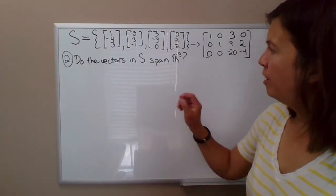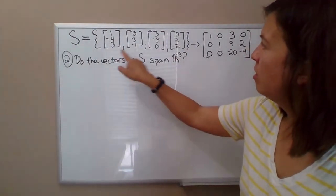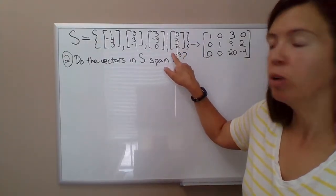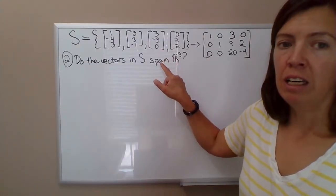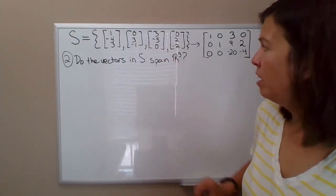In the last example video, we looked at this collection of four vectors in R³ and determined that this set is linearly dependent, not linearly independent.